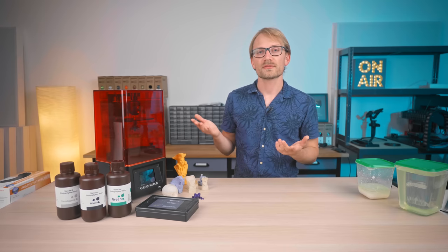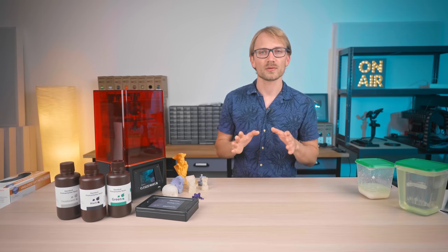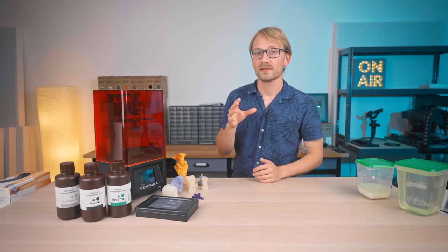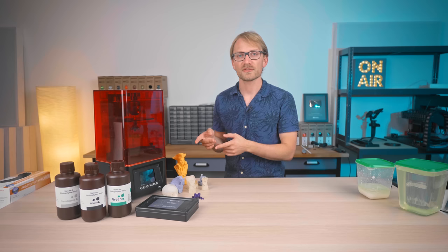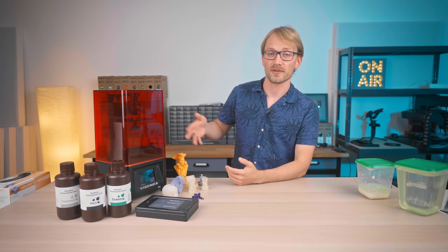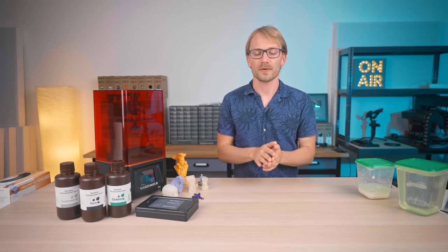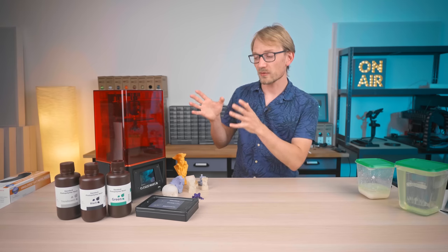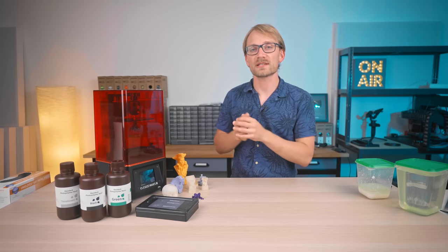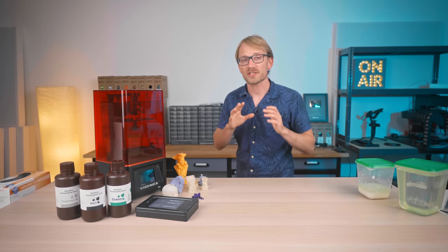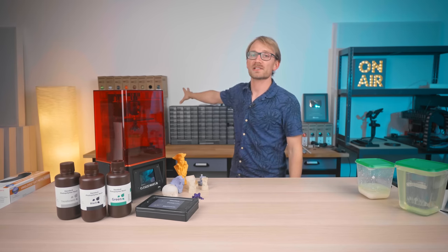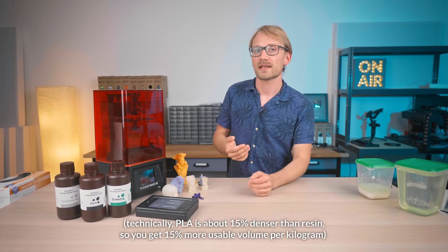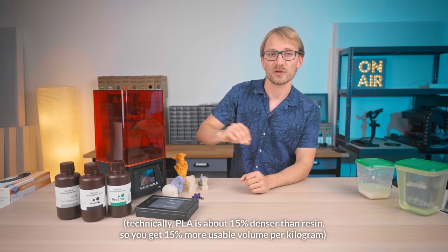Now, because resin printers are often relatively simple machines and don't have a ton of moving parts, you can get them for pretty cheap these days. The components used for the LCD screen and the electronics driving all of this are similar to what's being used in smartphones, so that certainly helps. But while the machine itself can be cheaper, printing with an SLA printer is more expensive than using a filament printer. Just as a rough ballpark, PLA costs around 20 to 25 bucks per kilogram, and resin is about 35 to 50 bucks per kilogram.